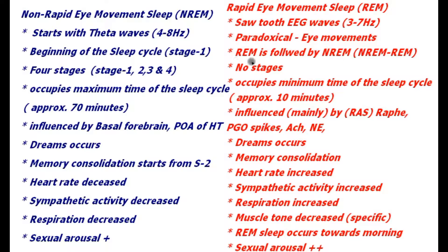REM sleep always follows the non-REM initial stage — non-REM first, then REM — and the cycle continues with a 90-minute duration on average, with four to six cycles in a typical night under normal physiological conditions. REM sleep occupies only one stage and takes a minimum time in the sleep cycle, approximately 10 minutes on average — about 7 minutes.